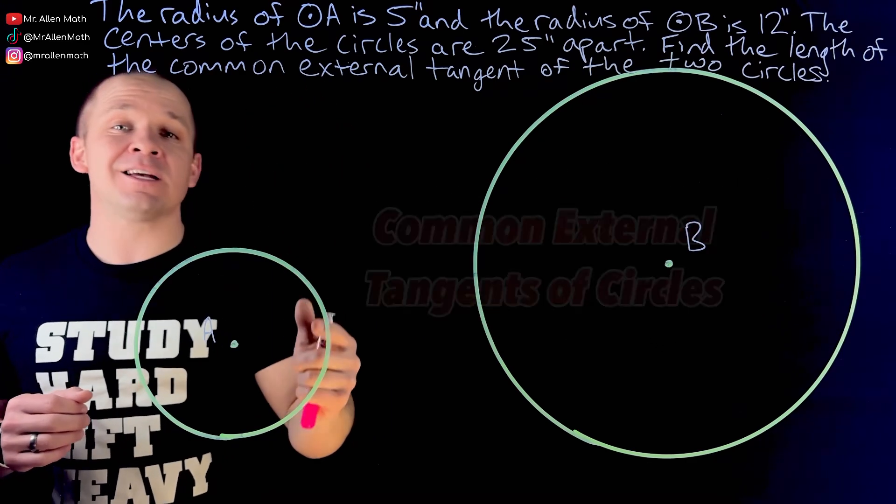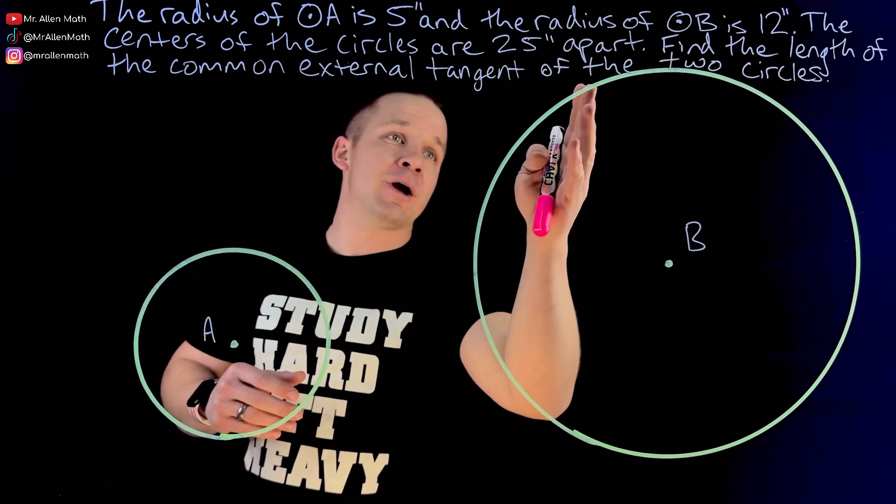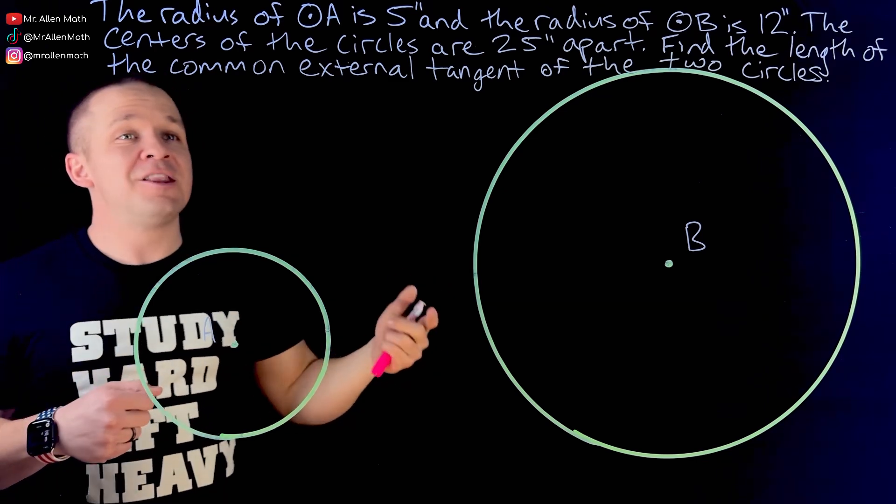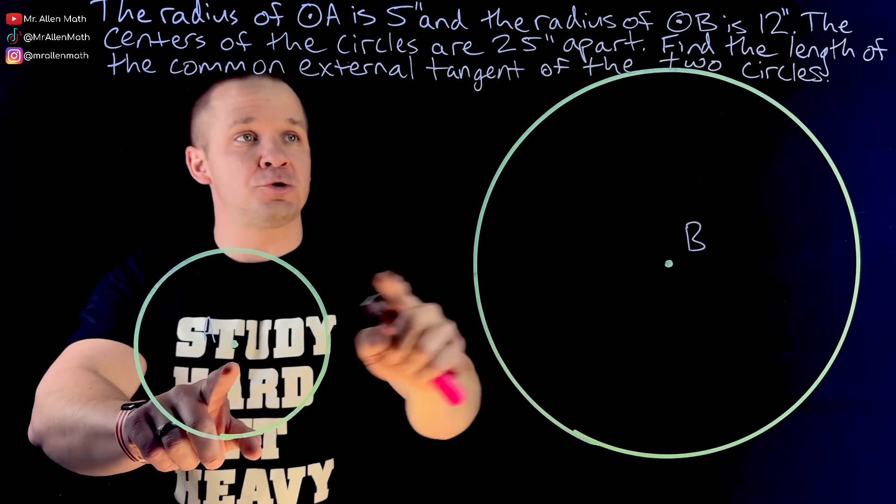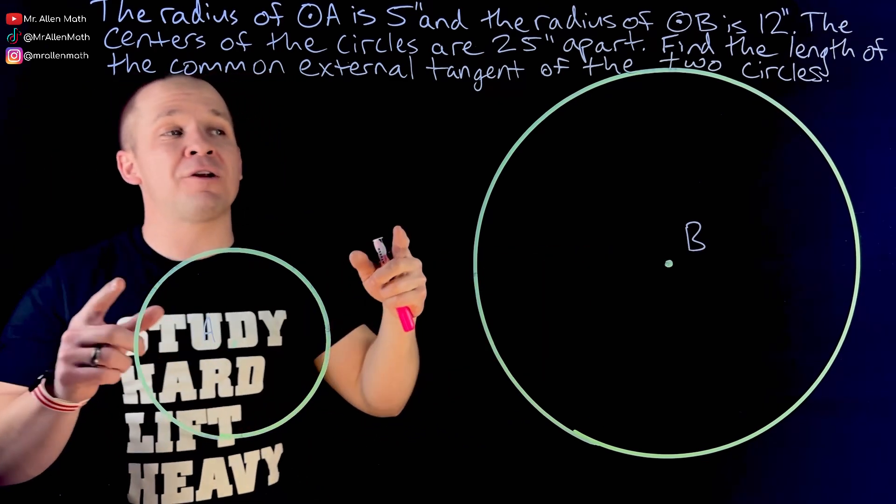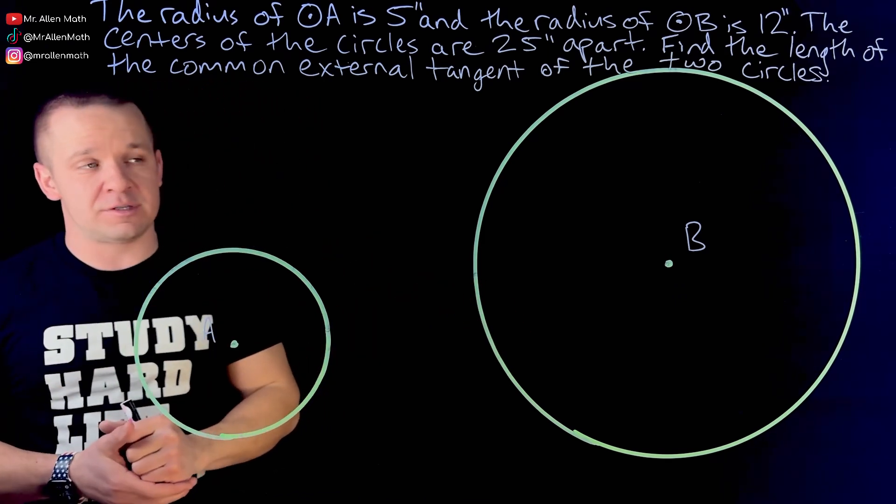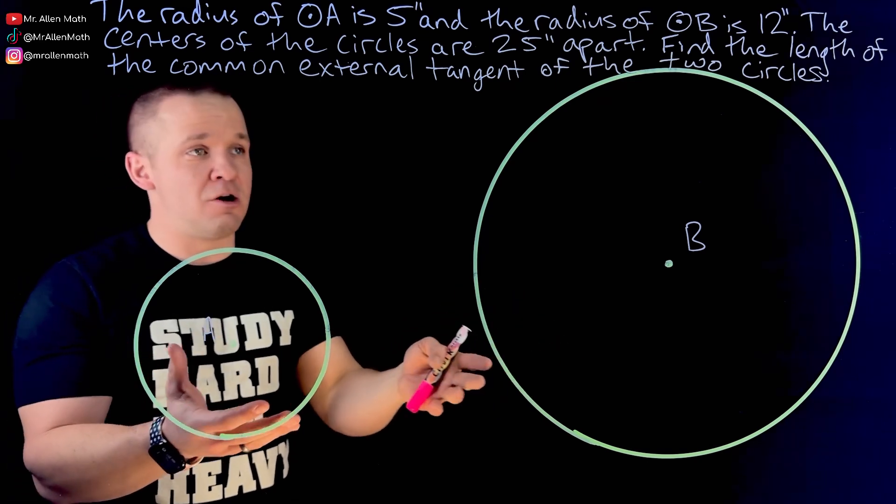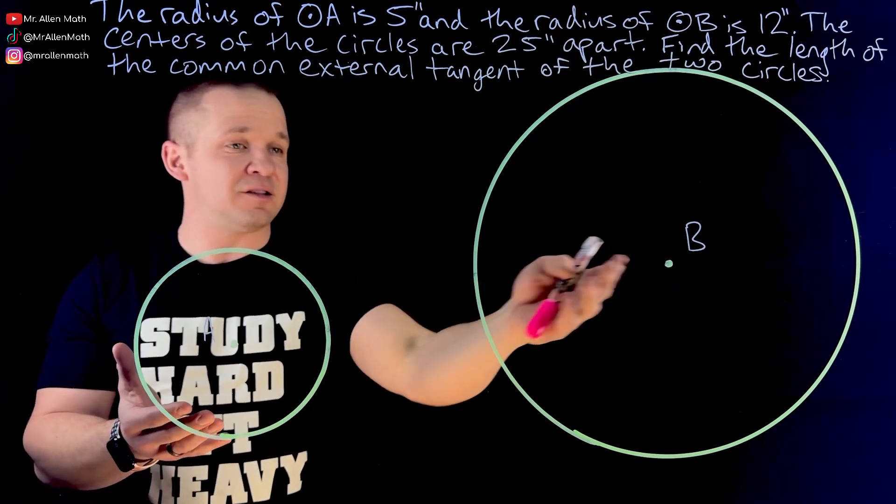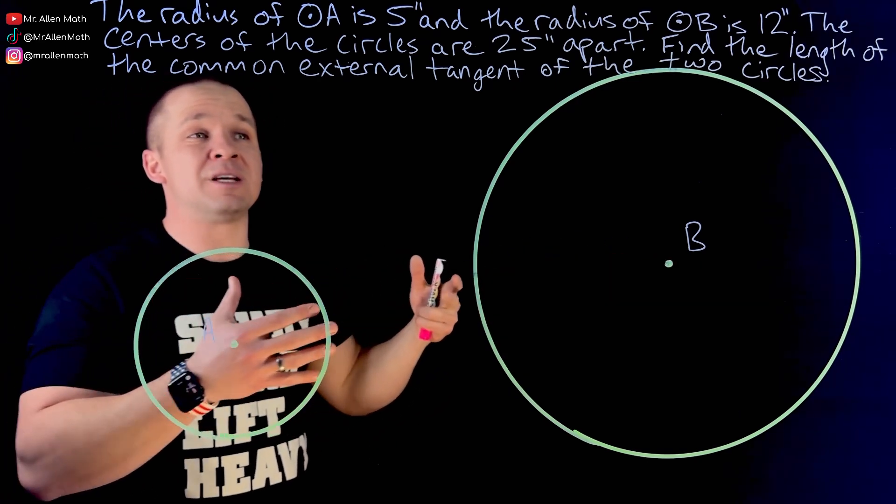The radius of circle A is 5 inches, it's a small guy. The radius of circle B, this one over here, is 12 inches. The centers of these two circles are 25 inches apart and we want to find the length of the common external tangent of the two circles. Well all we have drawn are the two circles. There's no common external tangent, I have nothing connecting the center so we are going to have to draw some things in here.